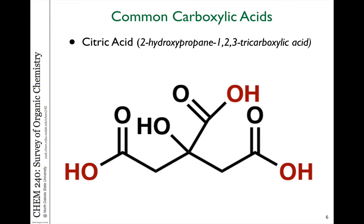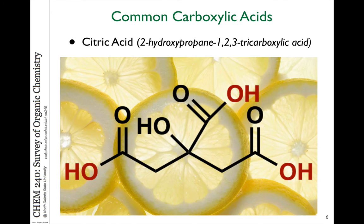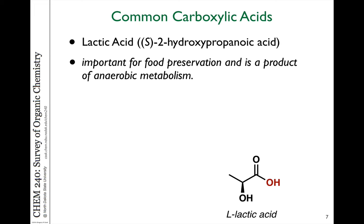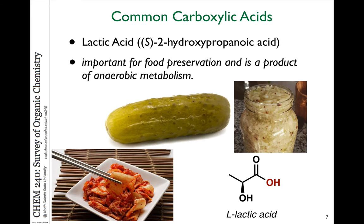Citric acid is also a carboxylic acid — it actually has three carboxylic acid groups. It's a five-carbon chain with an OH group in the middle and another carboxylic acid hanging off the middle, and this is the common acid found in citrus fruits; the tartness you taste from lemon is citric acid. Lactic acid is produced in our bodies through anaerobic metabolism of glucose, and is also a natural fermentation product of lactobacillus bacteria, important for food preservation. Pickled vegetables such as sauerkraut, pickles, or kimchi are fermented using lactobacillus to create a low-pH environment that preserves food and prevents dangerous food-borne bacteria. This is what gives fermented vegetables their sour taste.